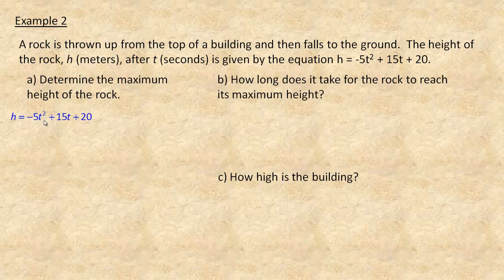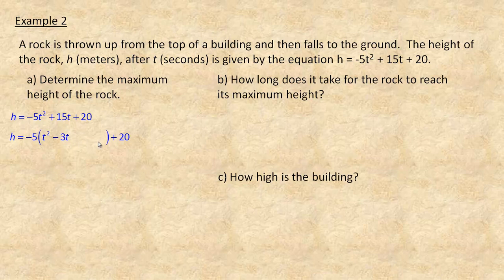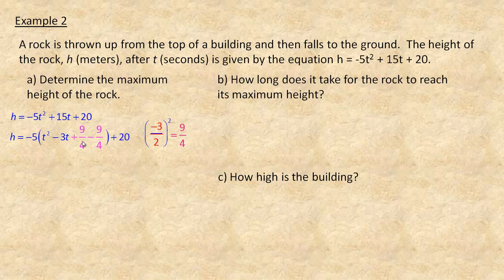Factoring negative 5 out of the t-terms: negative 5t² divided by negative 5 is t², and 15t divided by negative 5 is negative 3t. Now I'll leave a space to complete the square. We take negative 3 and divide by 2, then square it: negative 3 squared is 9 and 2 squared is 4, giving us 9/4. I'm going to keep this in fractions because this is a university-stream functions course.